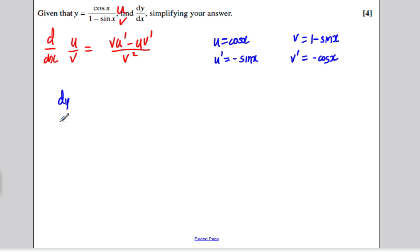So, dy by dx, the differential of y, this function here, is therefore v times u dash, so it's going to be 1 minus sin x multiplied by minus sin x, and it's going to be subtract u, which is cos x, times the differential of v, which is v dash, which is minus cos x. And all of that is going to be divided by v squared, and that would give me on the bottom 1 minus sin x all squared.